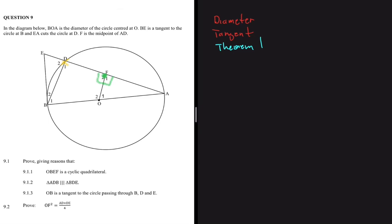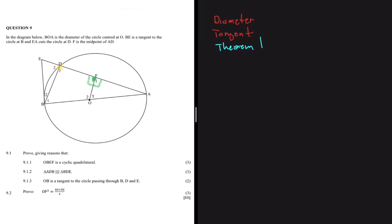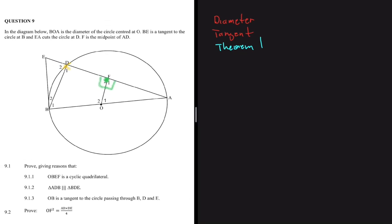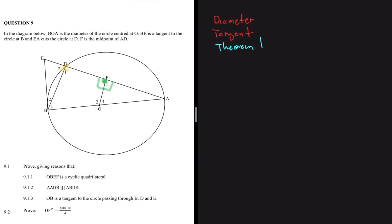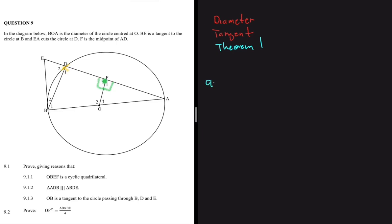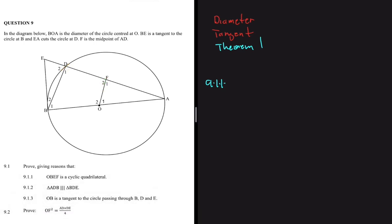So let's write down Theorem 1 as our third keyword. That's all the information we have, and we shall be able to get the 11 marks for this question using only these three statements. We have 9.1.1, which says: prove with reasons that OBEF is a cyclic quadrilateral.